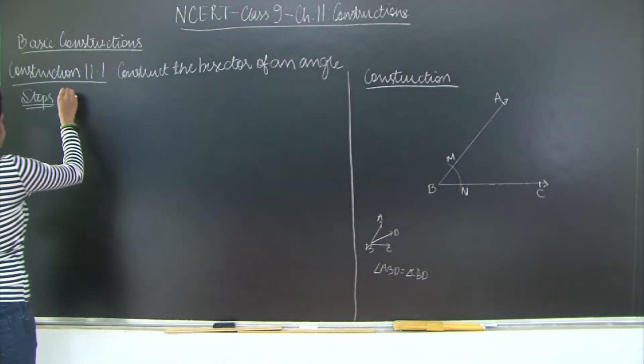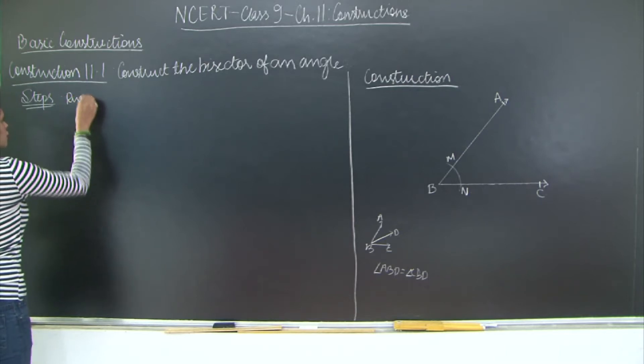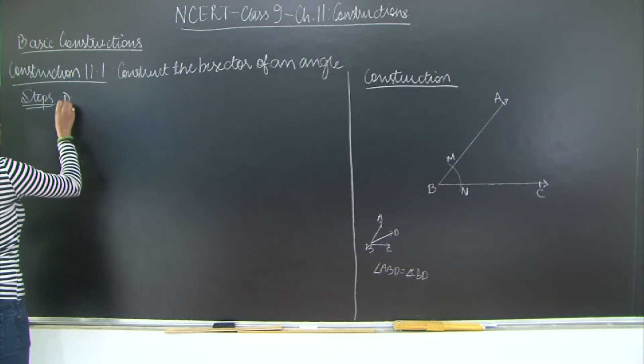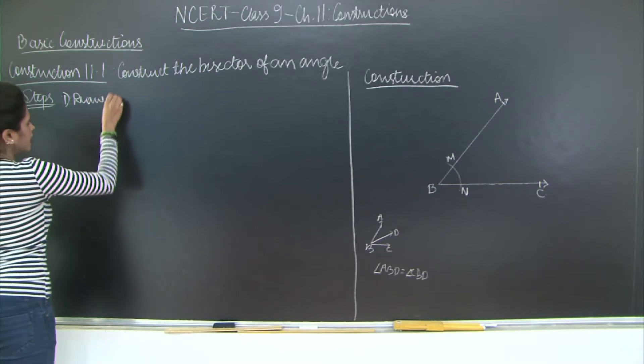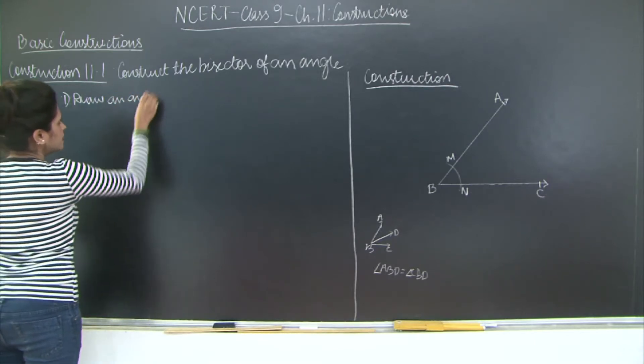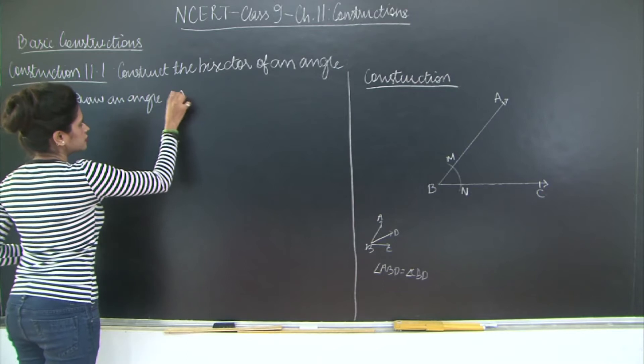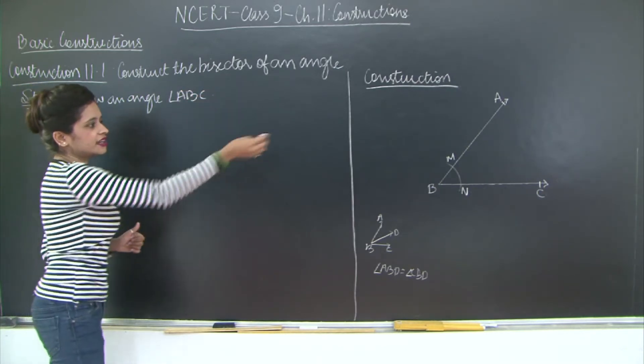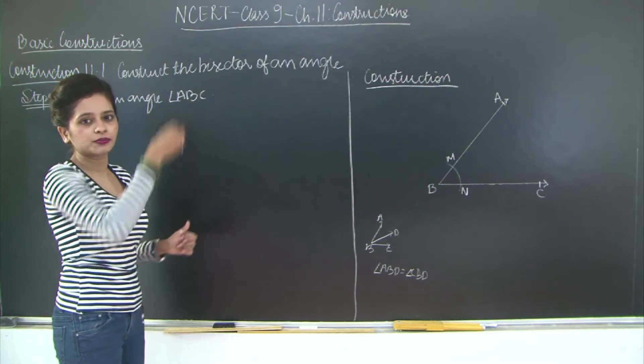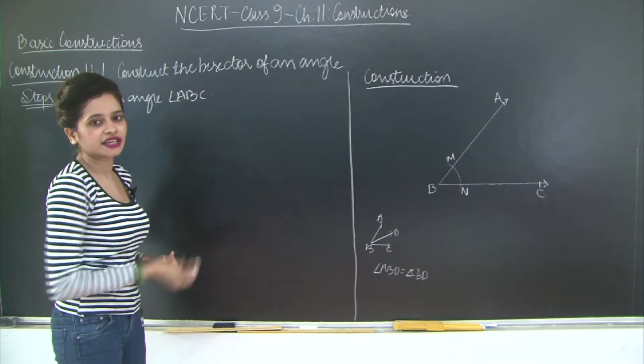Right now it is not really important that you take ABC as your angle and MN as the arc. So the steps is, first step draw an angle any angle ABC. So it could be an acute angle, a right angle, an obtuse angle anything I have taken an acute angle.